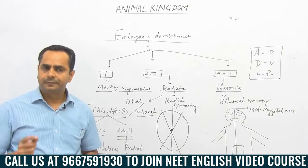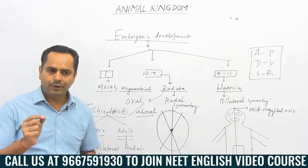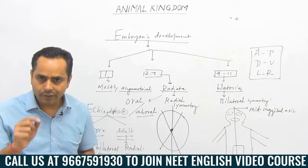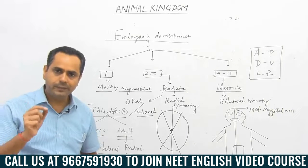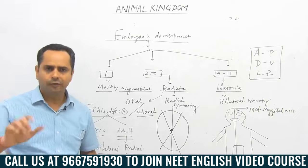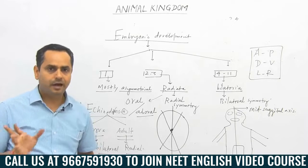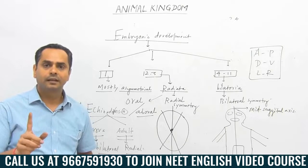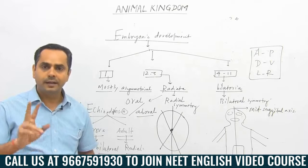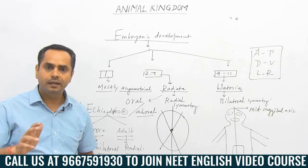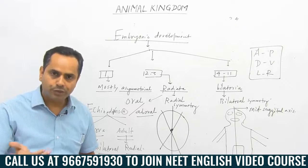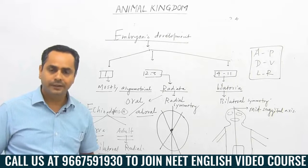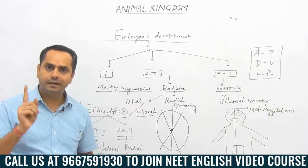Remember, if we talk about the group of echinoderms: echinoderms always belong to the group Bilateria, whatever their symmetry is. It hardly matters — the group is Bilateria. Both kinds of symmetry are present in echinoderms, but the group is always Bilateria.